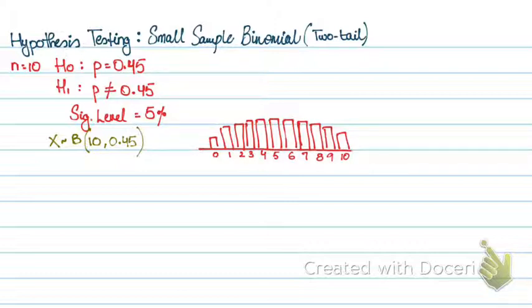Since this is a two-tailed test, that means that the critical region needs to be on both the right-hand side and the left-hand side. So it is 2.5% on the right-hand side and 2.5% on the left-hand side, but this is my stated significance level. I need to find out my actual significance level to determine the critical regions.